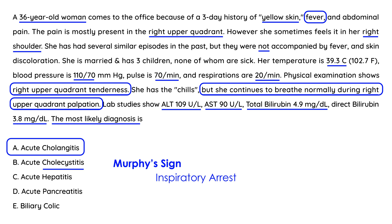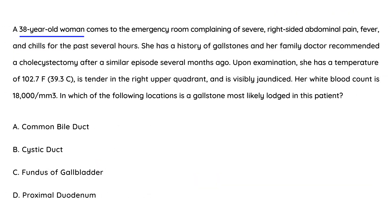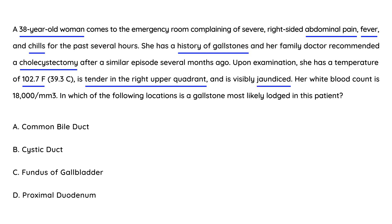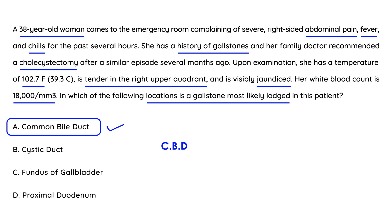Cholecystitis is inflammation of the gallbladder, whereas cholangitis is inflammation of the biliary tree. Vignette 3: A 38-year-old woman comes to the emergency room with severe right-sided abdominal pain, fever, and chills. She has a history of gallstones and was previously recommended a cholecystectomy. She is febrile at 102°F, tender in the right upper quadrant, visibly jaundiced, with a white cell count of 18,000. In choledocholithiasis progressing to cholangitis, the stone is most likely lodged in the common bile duct.